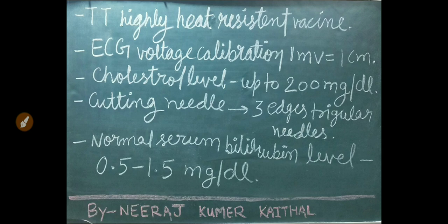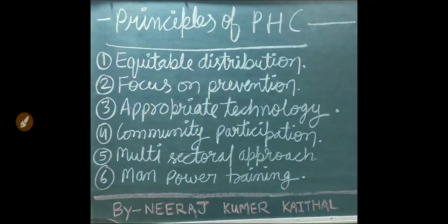ECG voltage calibration: 1 mV equals 1 cm. Normal cholesterol level is up to 200 mg/dL. Cutting needles are three-edged triangular needles. Normal serum bilirubin level is 0.5 to 1.5 mg/dL. Principles of primary health care include equitable distribution, focus on prevention, appropriate technology, community participation, multi-sectoral approach, and manpower training.